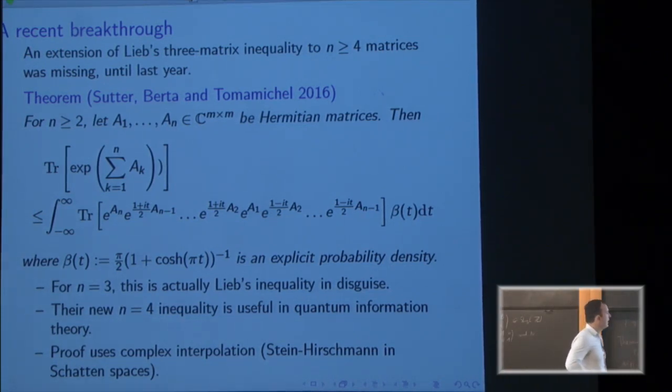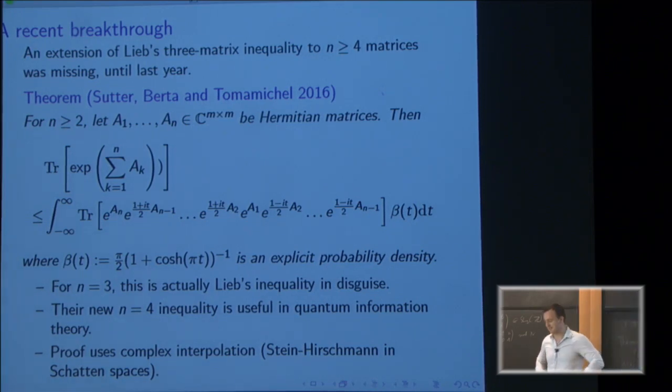Okay. Good. So they were really motivated by the n equal to four case, which is the first new inequality. And they use that in quantum information theory to prove something that strengthens the strong sub-additivity of entropy. Okay. So there's this big inequality and there's this inequality for n equal to three. And I now want to talk about their relation. Okay. Any questions about this slide?